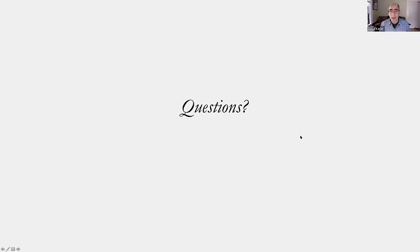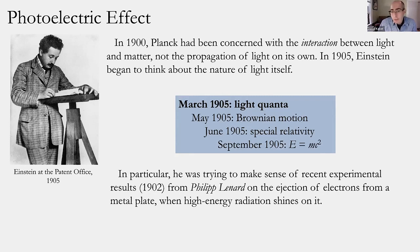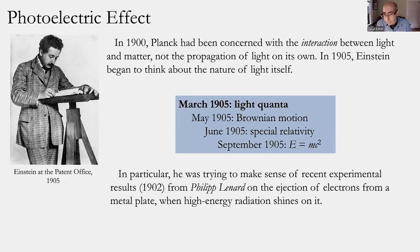Let's move on to see what Einstein begins to do with that in 1905. Planck was concerned about the interaction between light and matter — but for the propagation of light itself he just took Maxwell's standard treatment off the shelf: light is clearly a continuous wave spread out through space. In 1905, young Albert Einstein — still patent clerk third class — began to think about the nature of light on its own, even when not necessarily interacting with matter.